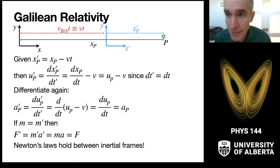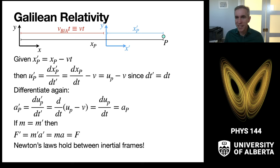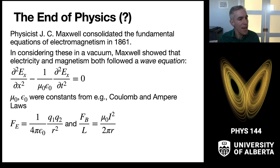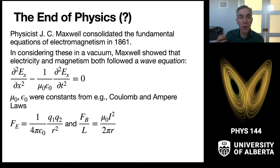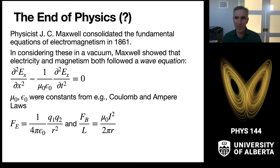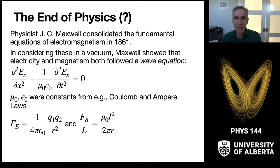With that as a backdrop, let's think about the state of physics at the end of the 19th century. Many people were describing this as the end of physics. One crowning piece of classical physics was developed by James Clerk Maxwell, who wrote down a consolidated representation of the equations of electromagnetism in 1861. This was a stunning tour de force. Maxwell's work showed that electricity and magnetism could be considered aspects of the same phenomenon: electromagnetism.